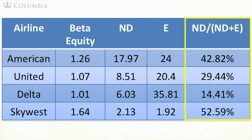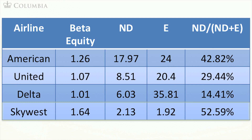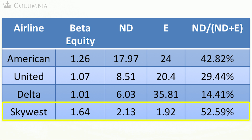In the last column, I show you the ratio of net debt to net debt plus equity. This measure gives you the level of debt as a fraction of the size of the firm and will be our preferred measure of capital structure. The firm with the lowest debt to size, and hence the lowest financial risk, is Delta. Not surprisingly, this is the firm with the lowest equity beta. The firm with the highest debt level, and consequently the highest level of financial risk, is SkyWest. Again, this is the firm with the highest beta.